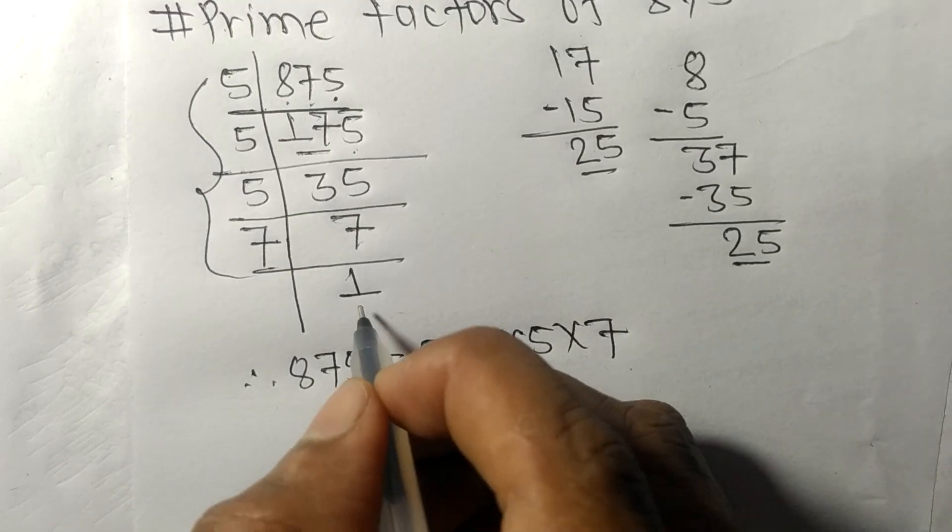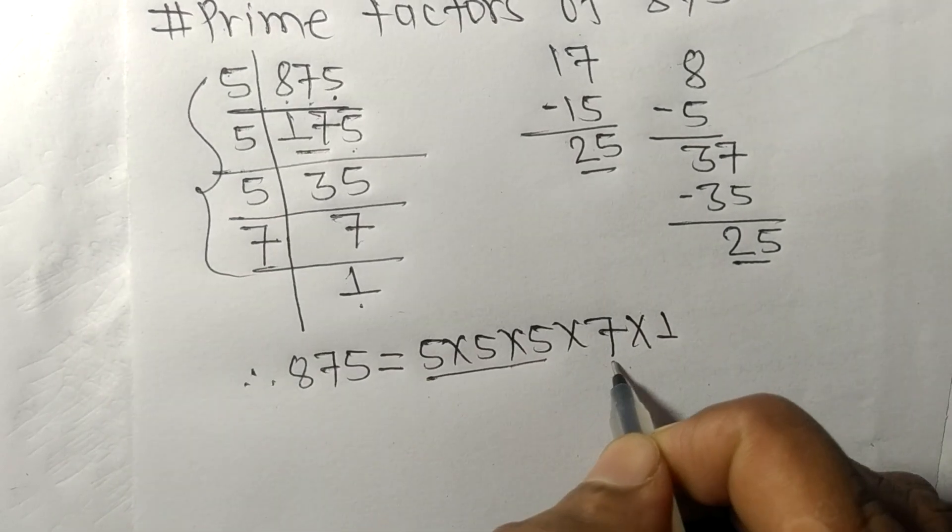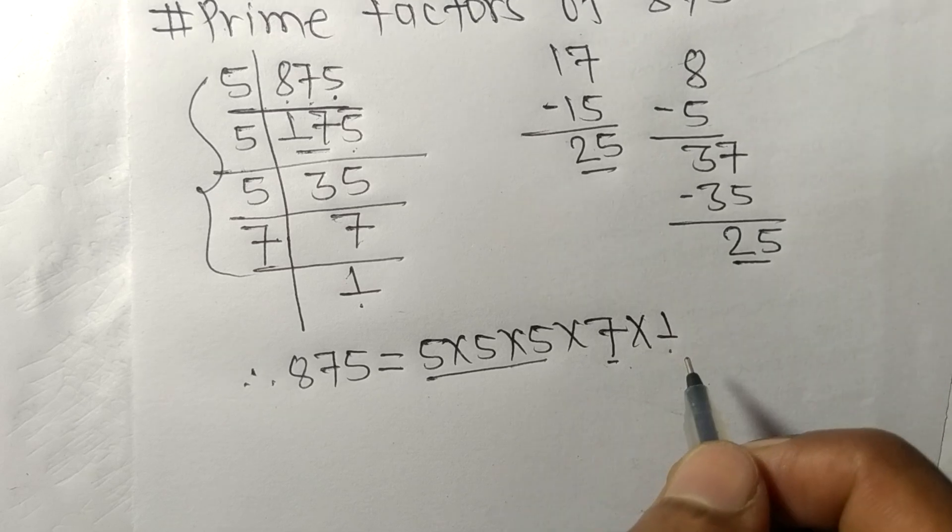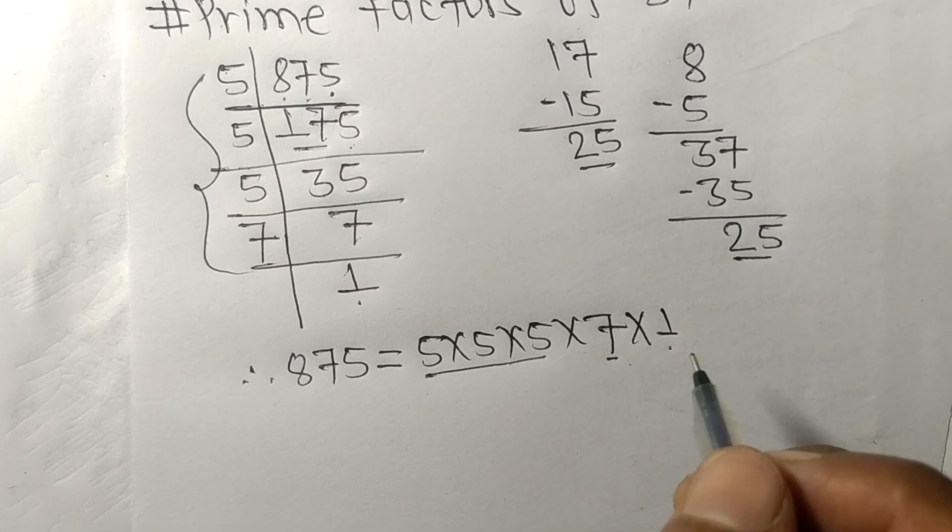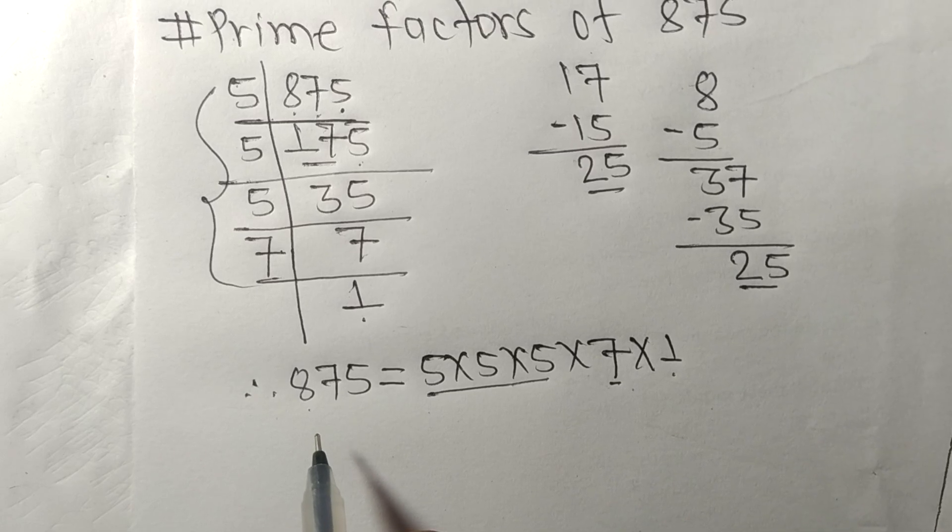So 5, 7, and 1 are the prime factors of 875. That's all for today, thanks for watching.